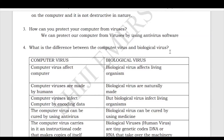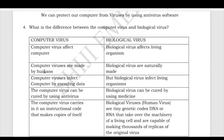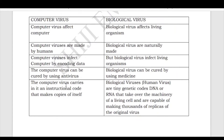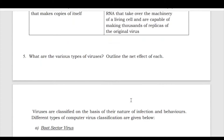Next: how does a computer virus differ from a biological virus? Computer virus affects computers, while biological virus affects living organisms. Computer virus is man-made, while biological virus is naturally made. Computer virus infects by encoding data, while biological virus infects living cells. Computer virus can be cured using antivirus software, while biological virus is cured using medicine. Computer virus carries instructional code, whereas biological virus carries genetic material — DNA or RNA.